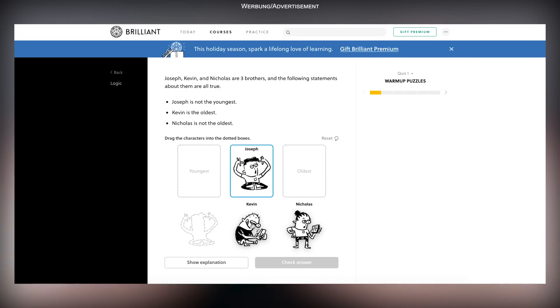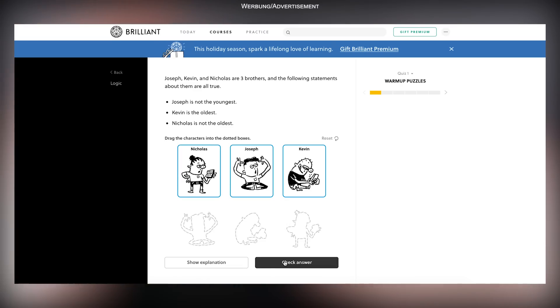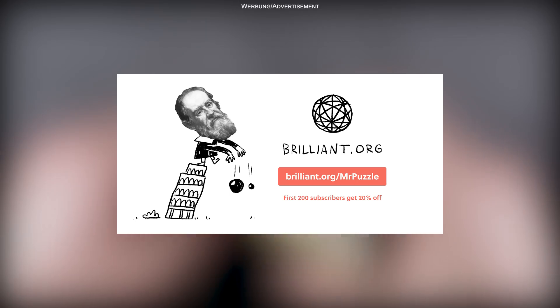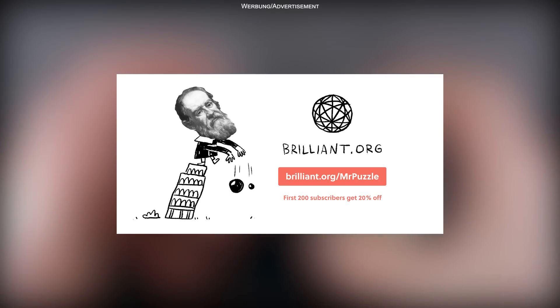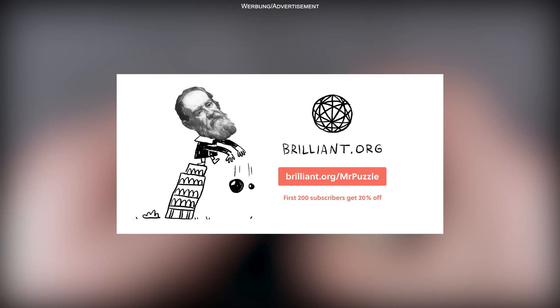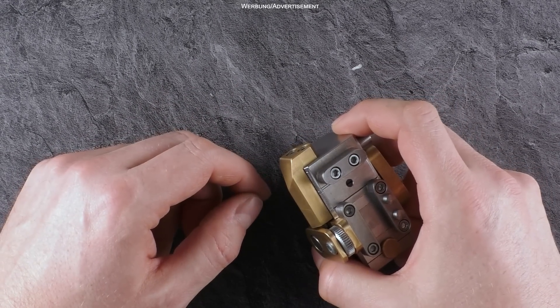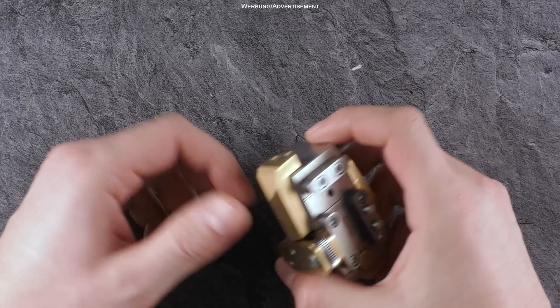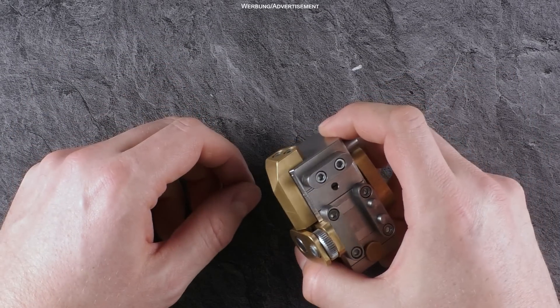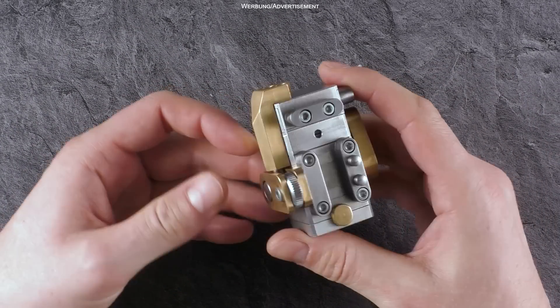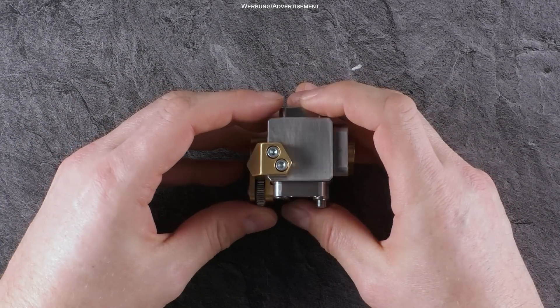Brilliant makes that possible with their interactive courses and even a mobile app that you can use on the go. Improve your analytical abilities and learn how to take a complex concept and break it down into bite-sized, understandable chunks. To support Mr. Puzzle and learn more about Brilliant, go to brilliant.org slash Mr. Puzzle and sign up for free. And also, the first 200 people that go to that link will get 20% off the annual premium subscription. Always keep in mind, investing time and effort in learning something is investing in yourself. Thanks again to Brilliant for sponsoring my channel and now, let's continue with this amazing-looking puzzle after the spoiler break.